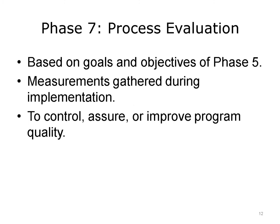Phase 7 is the process evaluation, and this is an ongoing feature of any program. You want to have real-time information, if at all possible, on your ability to implement a program over time. If there are delays, shortfalls, or other things slowing the complete implementation, you may need to change course or take corrective action to assure that the program is being implemented as intended.